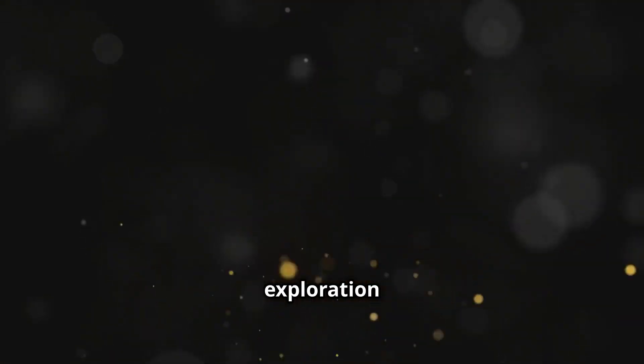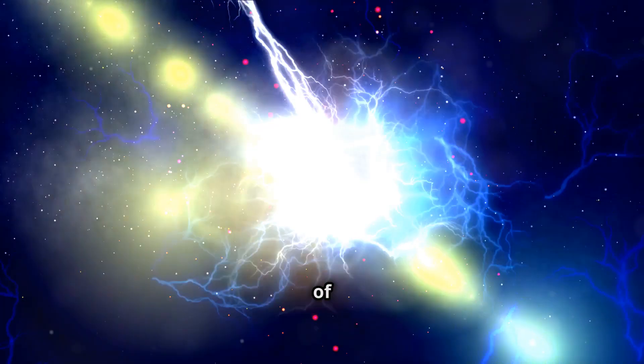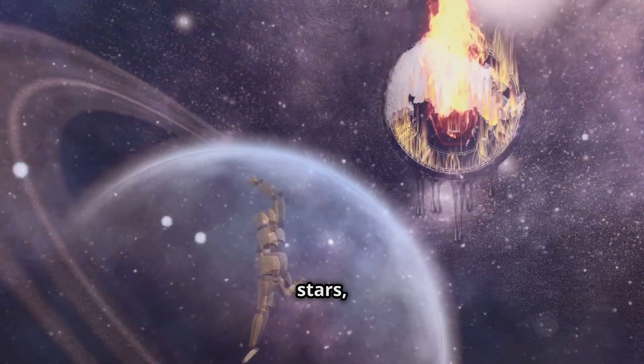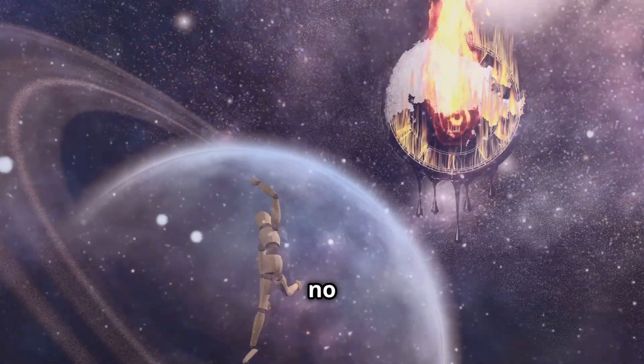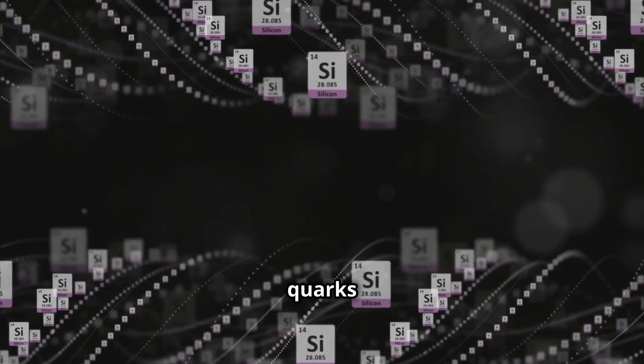Let's start our exploration with fermions, the particles that make up everything we can see and touch. These particles are the building blocks of atoms, the basic units of matter. Without fermions there would be no stars, no planets and no us. Fermions are divided into two main groups, quarks and leptons.